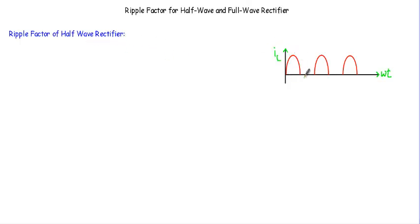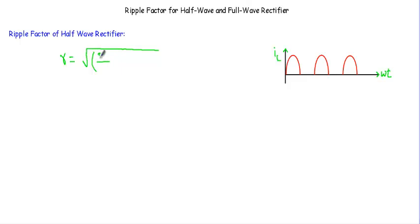This is the load current of our half wave rectifier circuit. We calculate the ripple factor gamma of any rectified output by using this formula: (IRMS / IDC) whole square minus 1.